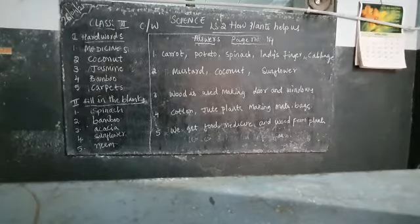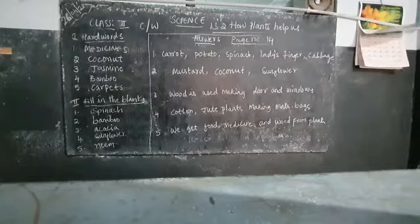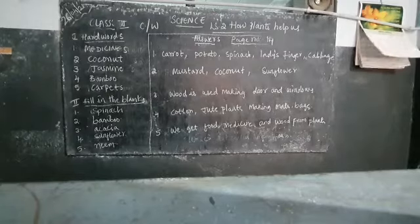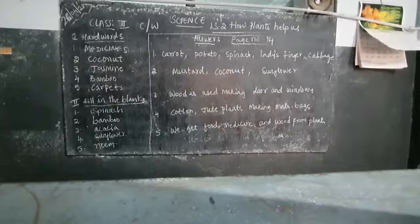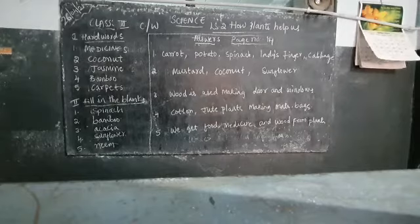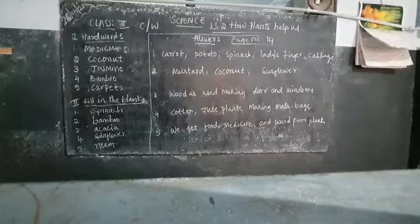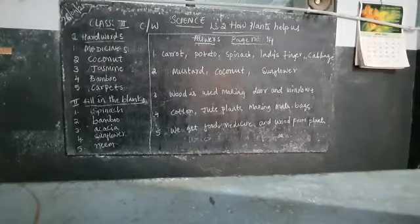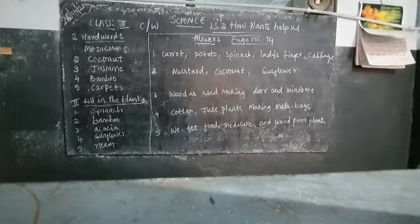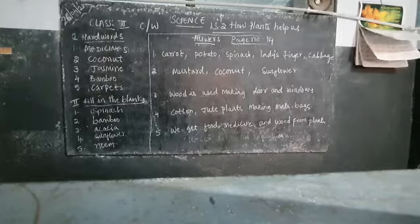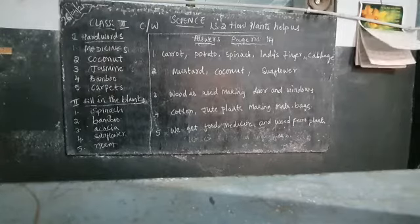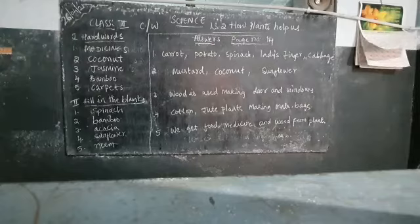Medicines from plants: some plants also give us medicines. We get medicines from eucalyptus, neem, tulsi and garlic plants. We also get wood from plants. Trees give us wood. Wood is used for making doors and windows of our homes. Wood is used as fuel also.